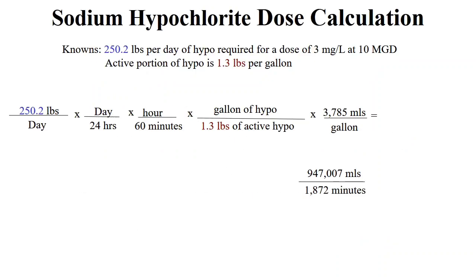The hypo calculation is the same as the alum calculation, except we use 1.3 pounds per gallon in the denominator instead of 5.4 pounds for alum. Pounds, days, hours, and gallons all cancel, leaving mL per minute. Multiplying 250 times 3,785 again gives 947,007 in the numerator; 24 times 60 times 1.3 gives 1,872 in the denominator, which gives a feed rate of 506 mL per minute of hypo to dose 3 milligrams per liter at 10 MGD.